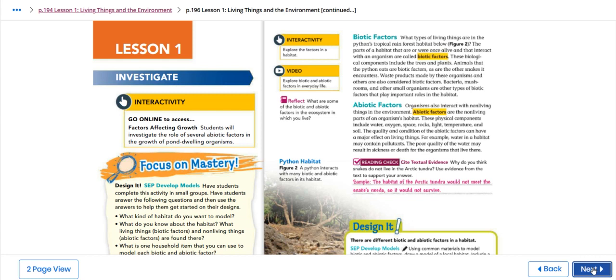Cats are biotic factors, as are snakes. Organisms also interact with non-living things in the environment, which are the abiotic factors. Abiotic factors are the non-living part of an organism's habitat. These physical components include water, oxygen, space, rock, light, temperature, and soil. The quality and condition of the abiotic factors can have a major effect on living things.